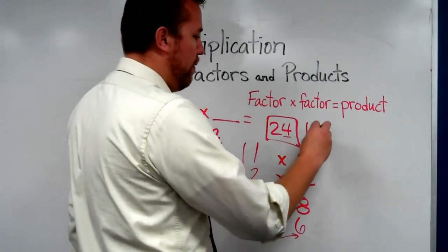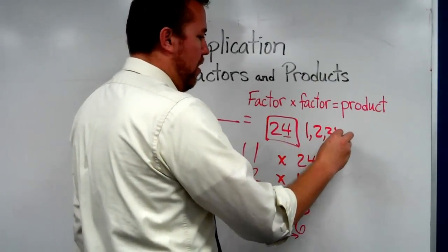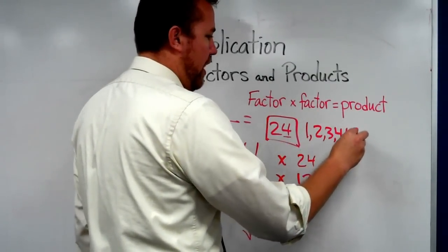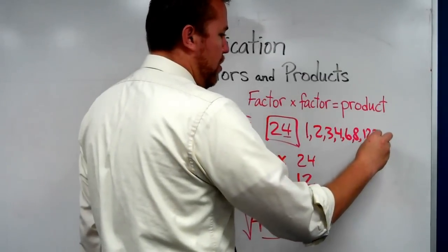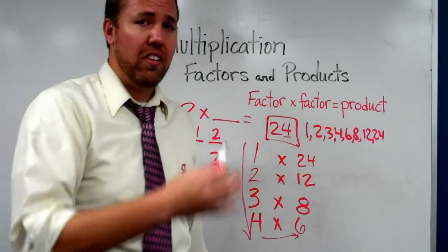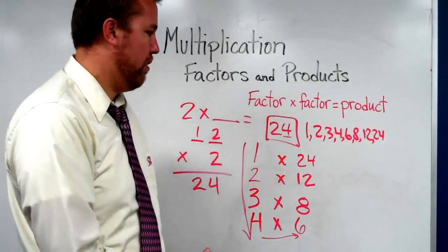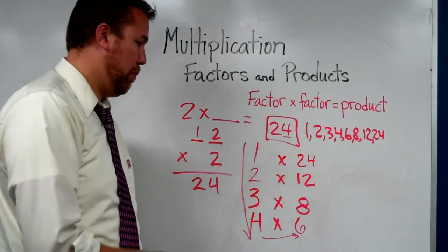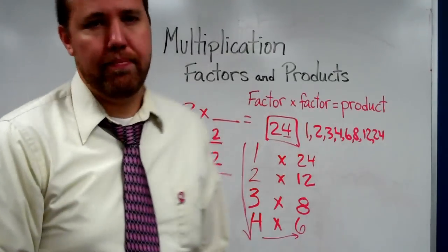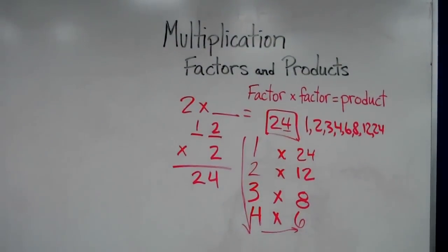And so the factors of 24 are 1, 2, 3, 4, 6, 8, 12, 24. And we would just list them out so that we can get to know the factors of any product that we have. Thank you.